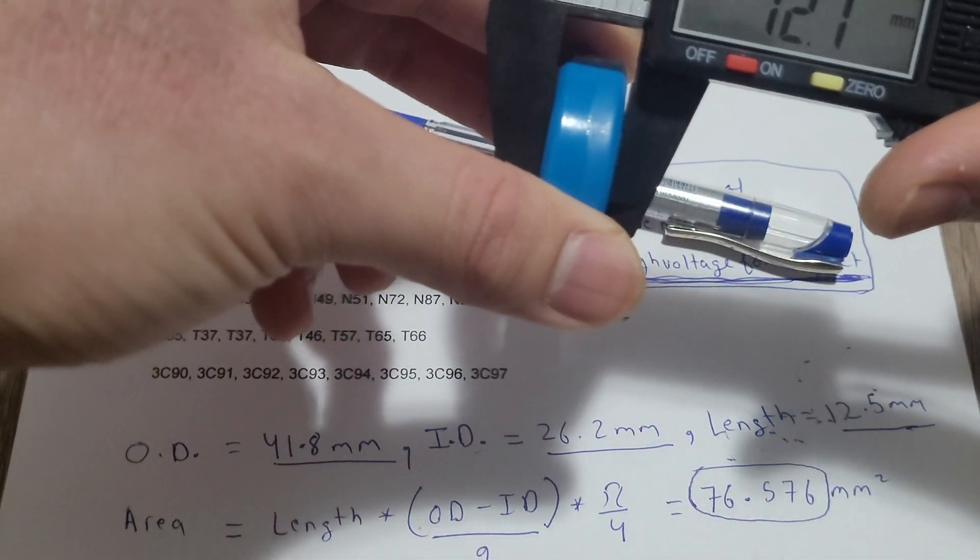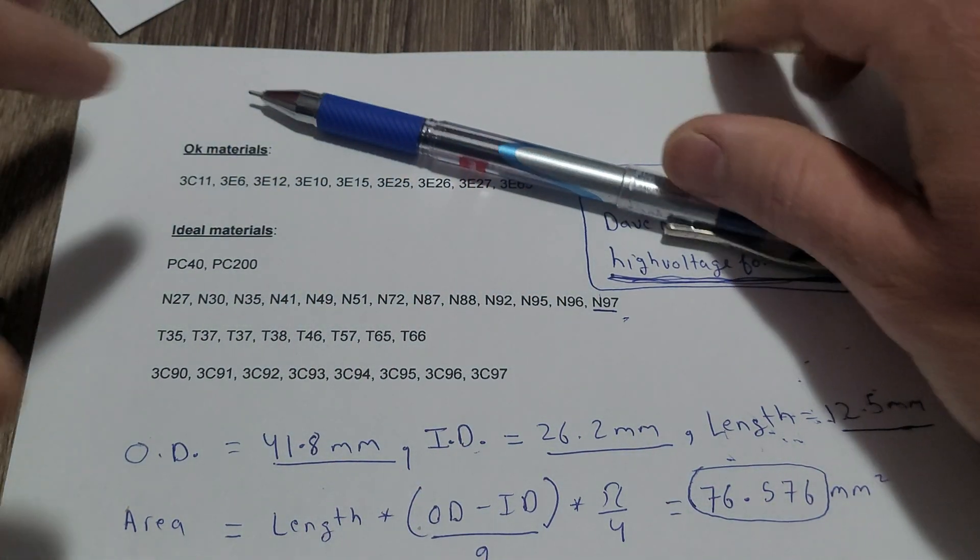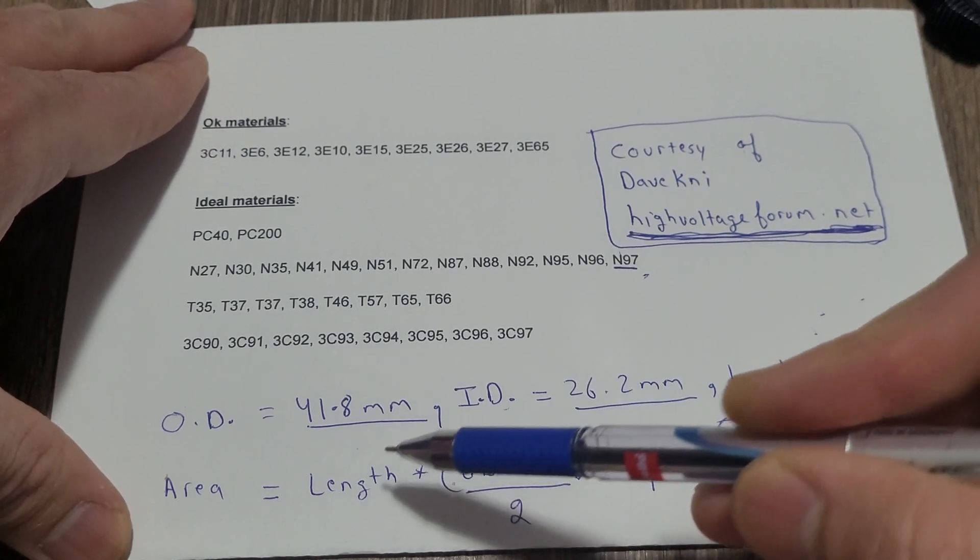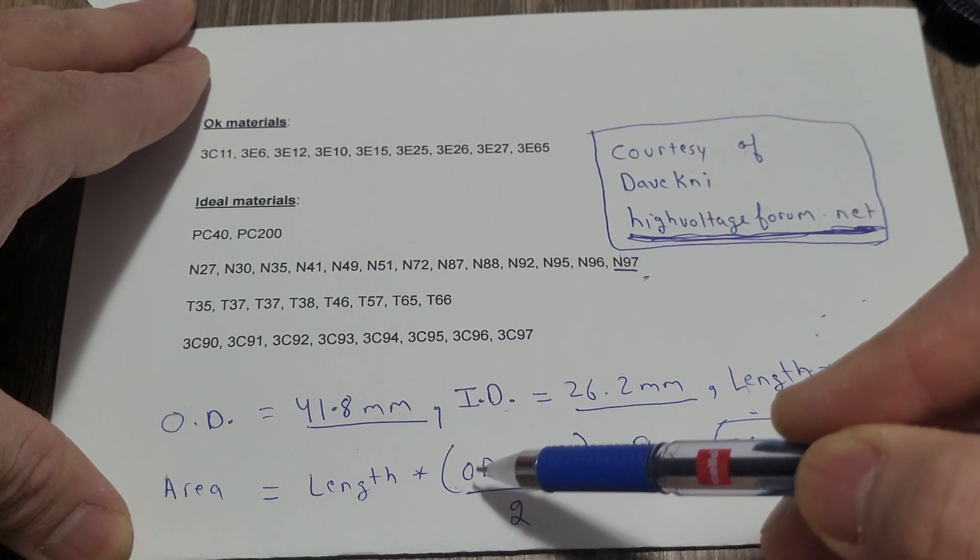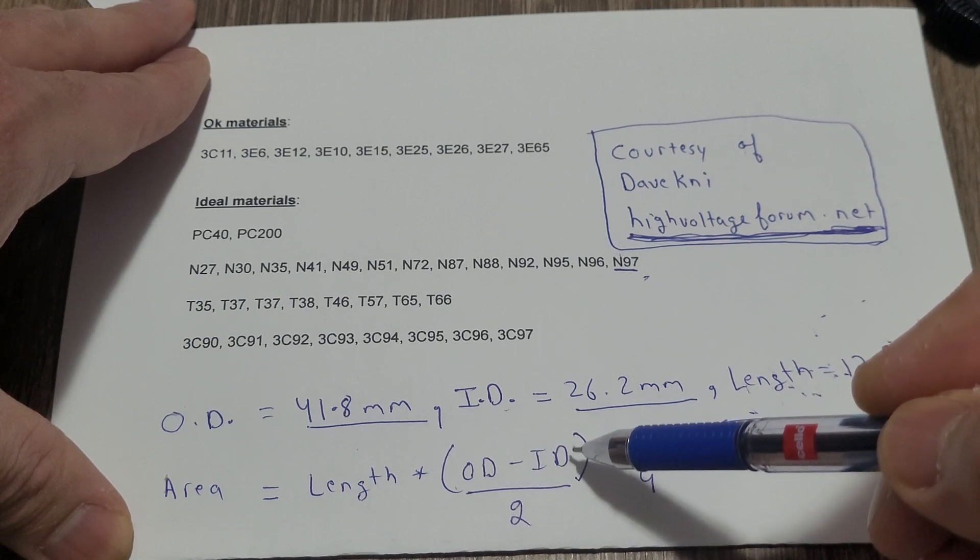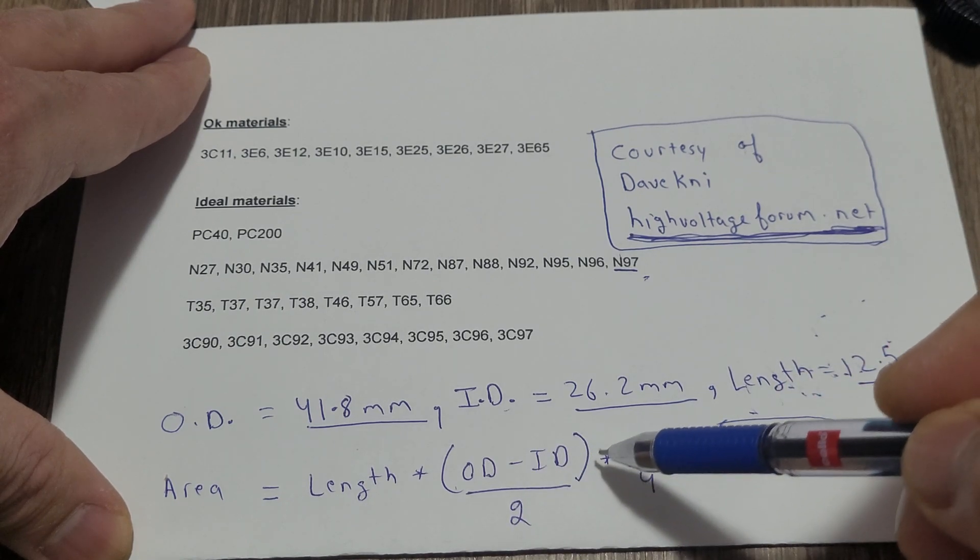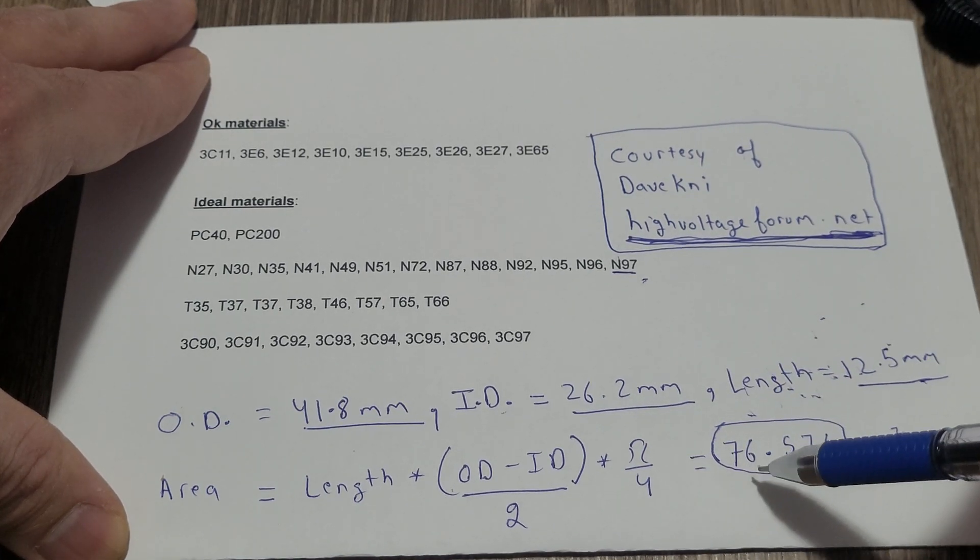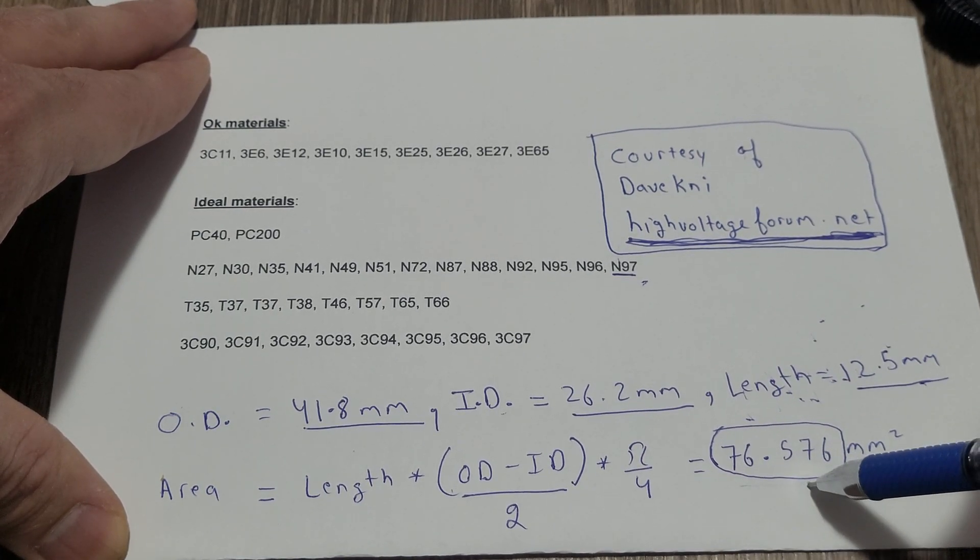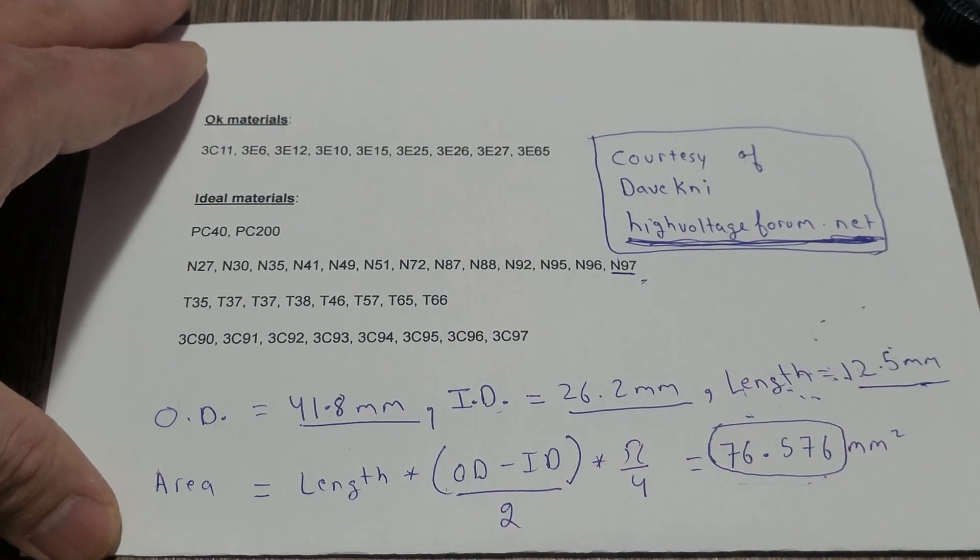After that use this formula: length into brackets, outer diameter minus inner diameter, divided by 2, into pi divided by 4. After plugging in all the values you should get this, or whatever values of your toroid core.